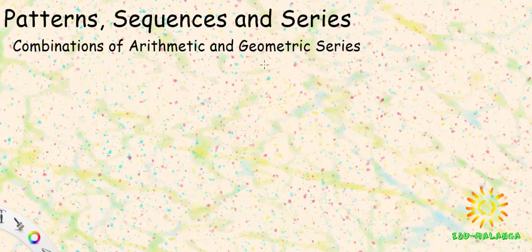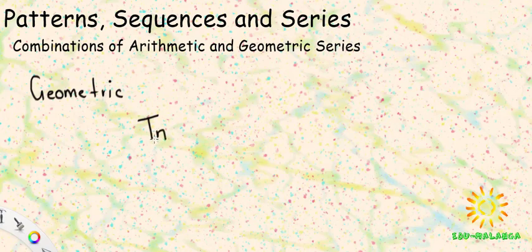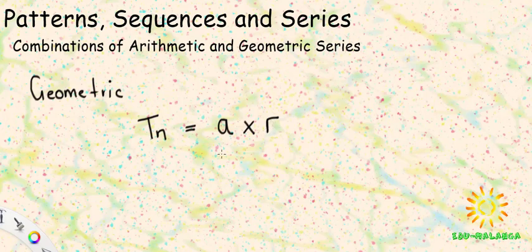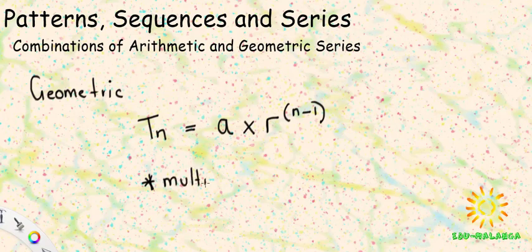The next kind of sequence we looked at was the geometric one. The general term looks like this: Tn = a × r^(n-1), where a is the first term and r is the common ratio. So every time you have a term, to get the next term you multiply by the common ratio. With geometric sequences you have multiplication and a common ratio, not a common difference.